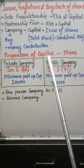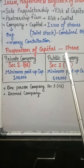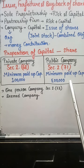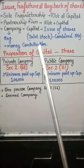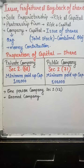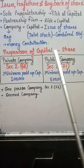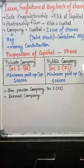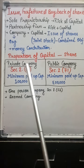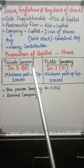There are two types of companies: public and private. When we talk about issue of shares, we need to know what is a private company and what is a public company. The relevant sections are Section 2(68) for private company and Section 2(71) for public company.